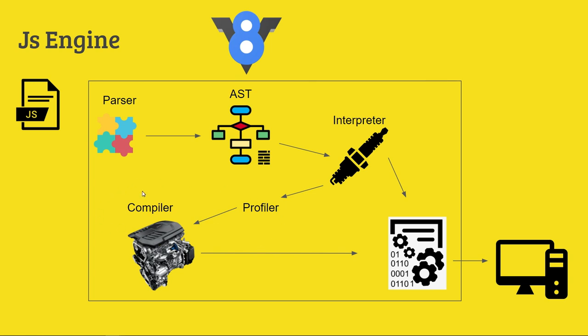Let me recap. Our V8 engine takes a JavaScript file. In the parser, there is lexical analysis, and an AST is built. The AST is passed down to both the interpreter and the compiler. The interpreter converts to machine language so the user can start to interact quickly.